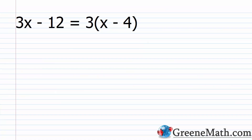Here's an example of an identity: 3x minus 12 equals 3 times the quantity x minus 4. Before we show why this is an identity, pick any number you want — it doesn't matter what it is — plug it in for x and I bet it works. I'm going to pick negative 8, plugging it in on both sides to see if we get a true statement.